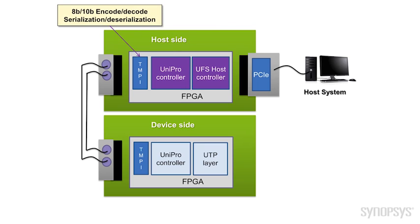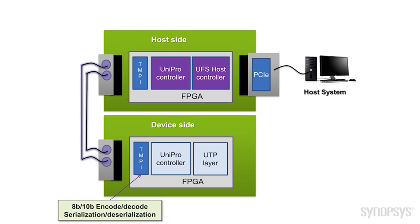The test MFI interface, also called TMPI, acts as a PHY layer in this prototype system. It takes care of 8B/10B encoding and serialization. In an ASIC implementation, the TMPI will be replaced with MFI type 1. Then the serialized data is transferred to the device side over RF cables. The serial data arrives at the device side TMPI for deserialization and 8B/10B decoding.